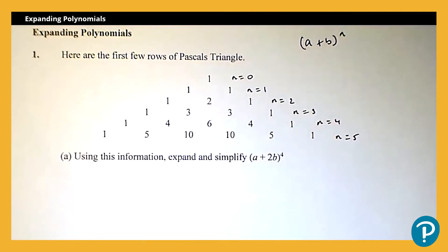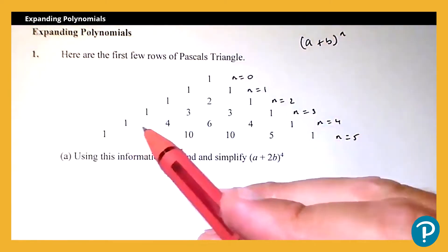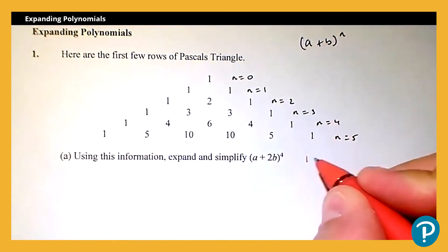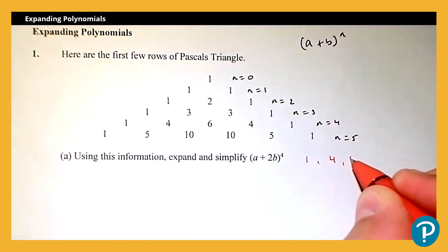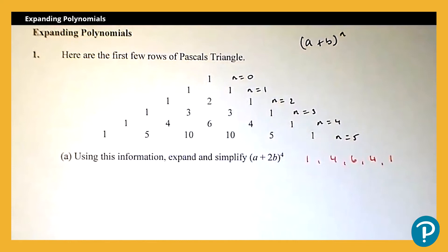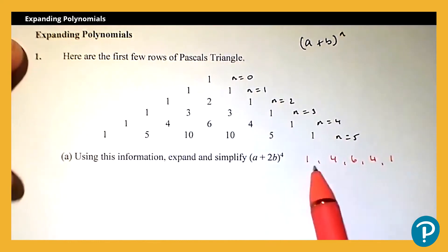Looking at the first question: using this information, expand and simplify (a + 2b) to the power 4. In this case n equals 4, so the row I'm interested in from Pascal's triangle is 1, 4, 6, 4, 1. I'll write that out — 1, 4, 6, 4, 1 — and that's going to generate the coefficients for the five terms.